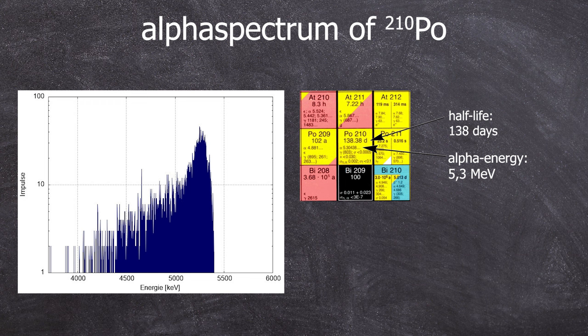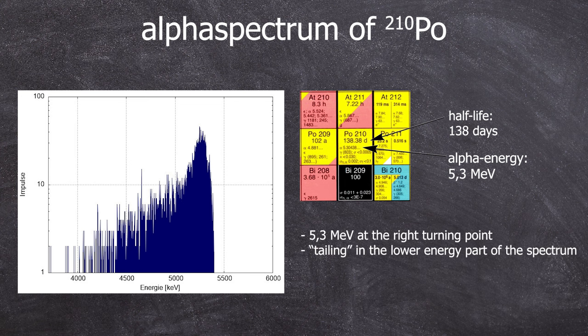Well, not exactly. It's the right turning point, but that's because the alpha calibration with alpha spectra is always done using the right turning points. And as usual, for every alpha spectrum, you can see the tailing in the lower energy range.